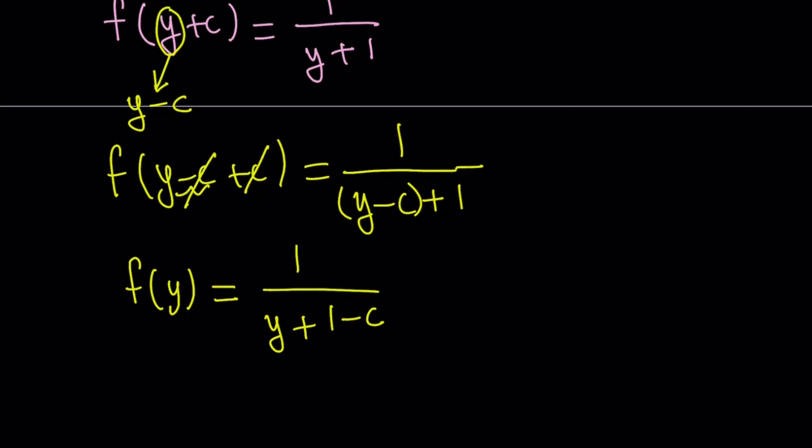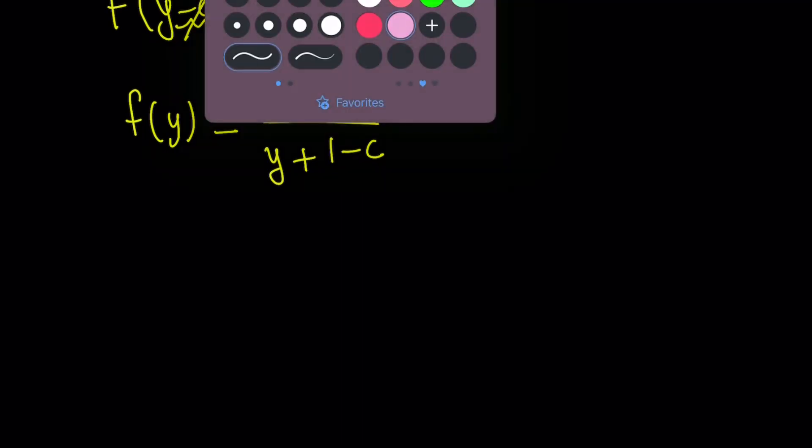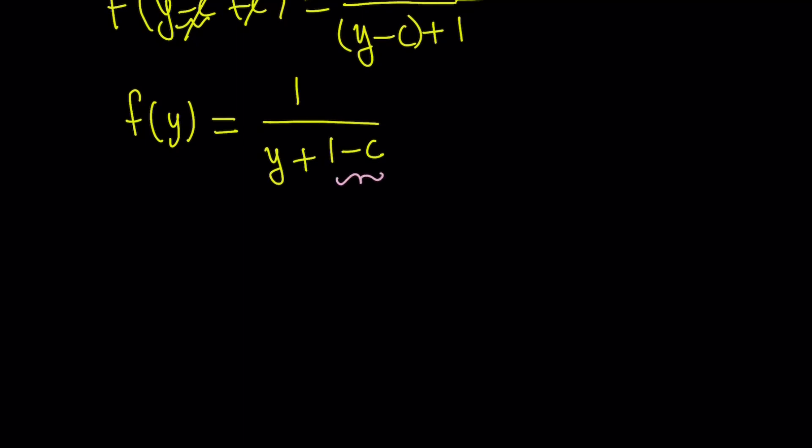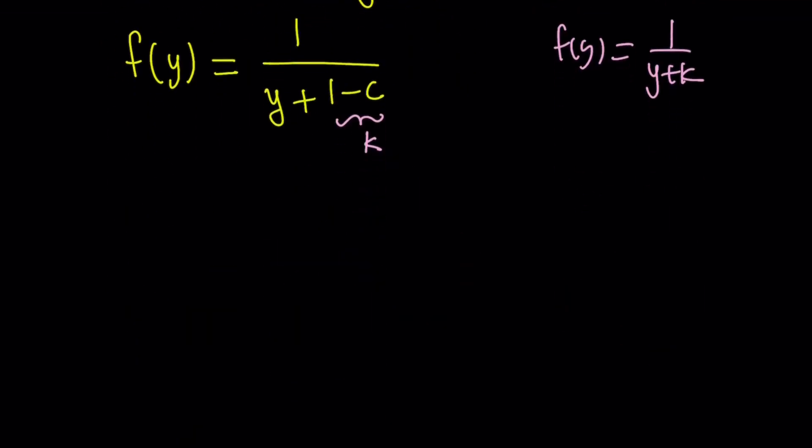Because I want to replace 1 minus c with another constant and just make it a little easier. You don't have to do that. But you could definitely go ahead and solve for this from now on. Actually, we can try that. But let me show you what I mean by that first. So I was going to replace 1 minus c with k. And then we're going to get f of y equals 1 over y plus k. And then we do know that f of 1 is equal to c. And then I'm going to replace y with 1, and so forth, and go from there. But we can directly do it.